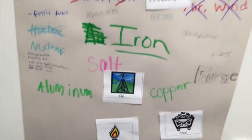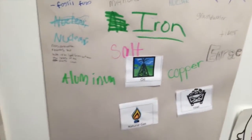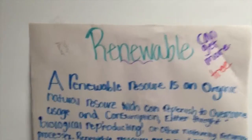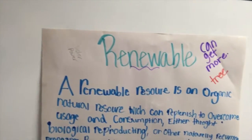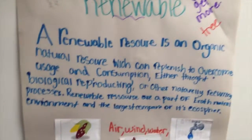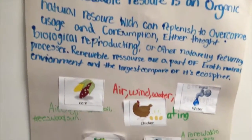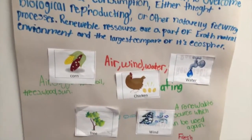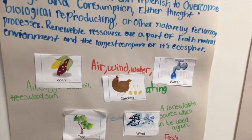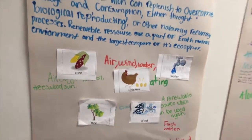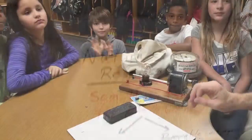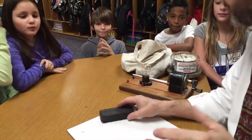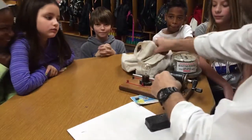They've done a really good job with some of these. Here are some renewable resources — they're organic, natural, and can be replaced in a short amount of time. So we have two types of natural resources. Let's look at some of these things up close.